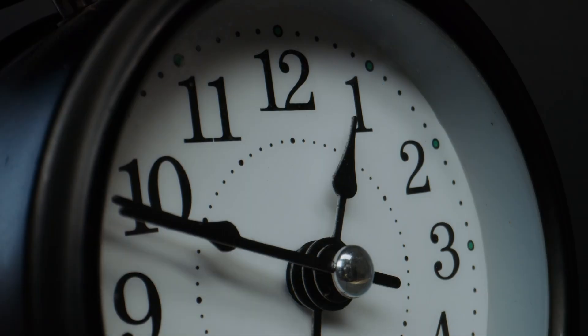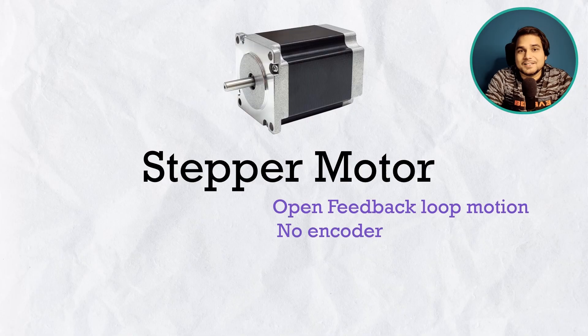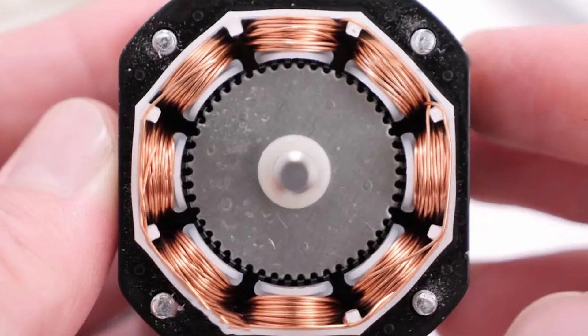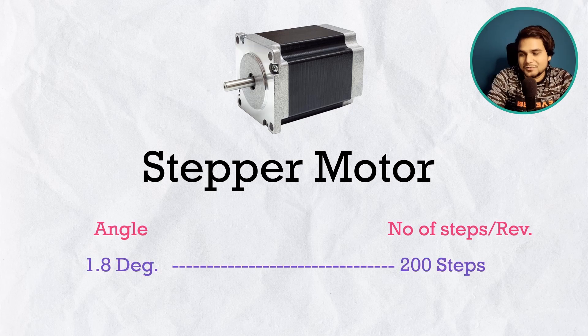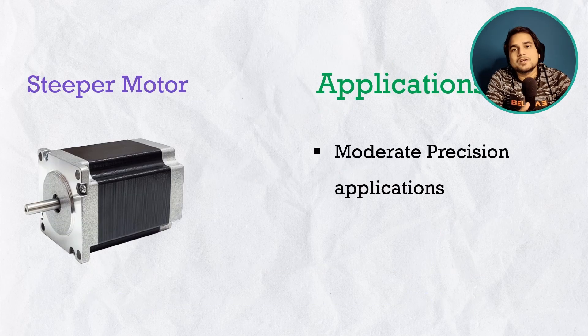Starting with the stepper motor: as the name implies, this motor rotates in steps. As pulses are given, the motor rotates in discrete steps accordingly — more pulses, more rotation. There is no feedback loop and no encoder in a stepper motor. The design is simple with a toothed rotor, and cost is low. Stepper motor accuracy is specified in steps: common values are 1.8°/step (200 steps per revolution) and 0.9°/step (400 steps per revolution).